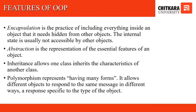Now what are the features of object-oriented programming, also commonly referred to as OOP? The features are: Encapsulation — the practice of including everything an object needs hidden from other objects; the internal state is usually not accessible by other objects. Abstraction — the representation of the essential features of an object. Inheritance — allows one class to inherit the features or characteristics of another. Polymorphism — represents having many forms; it allows different objects to respond to the same message in different ways, as a response specific to the type of object.